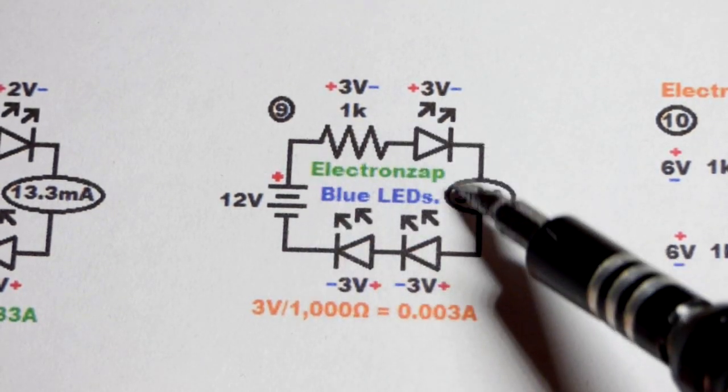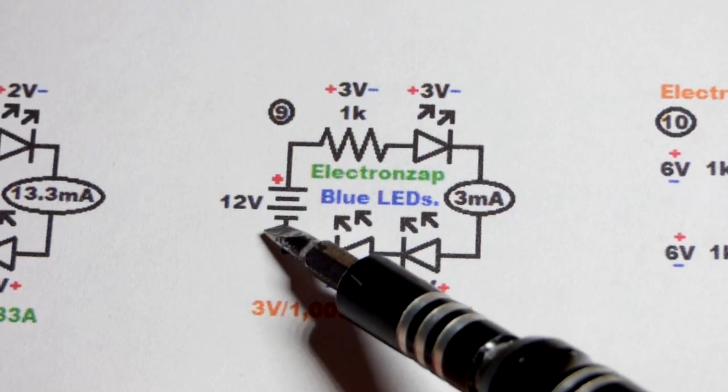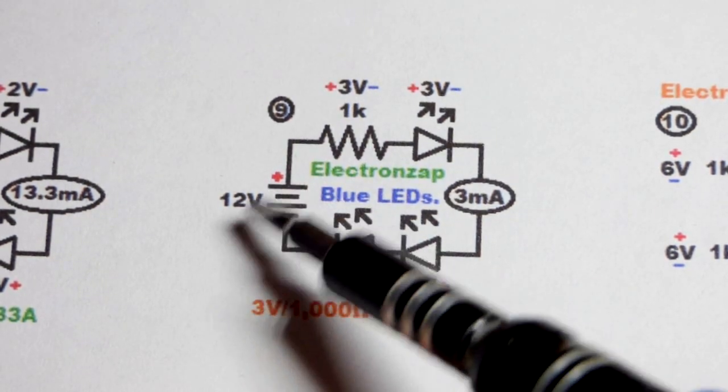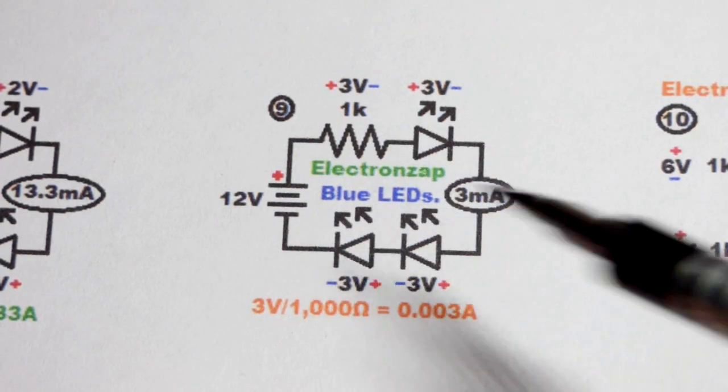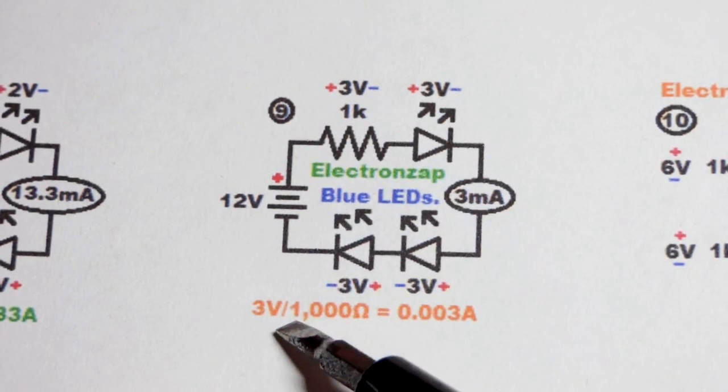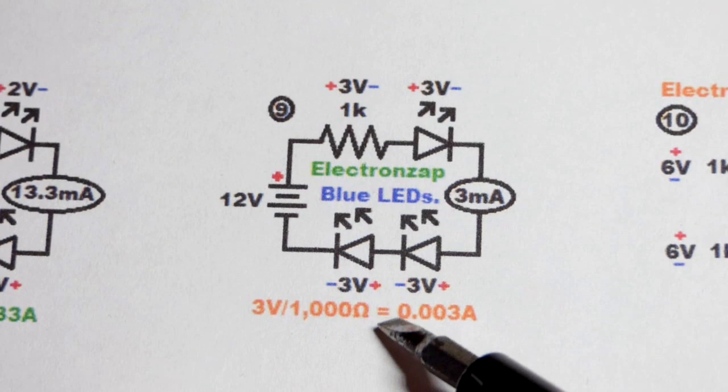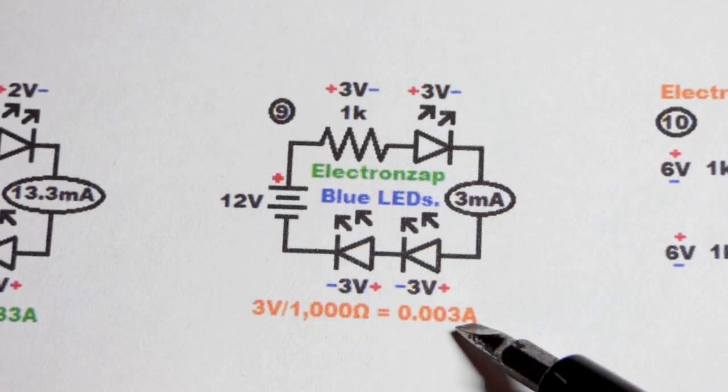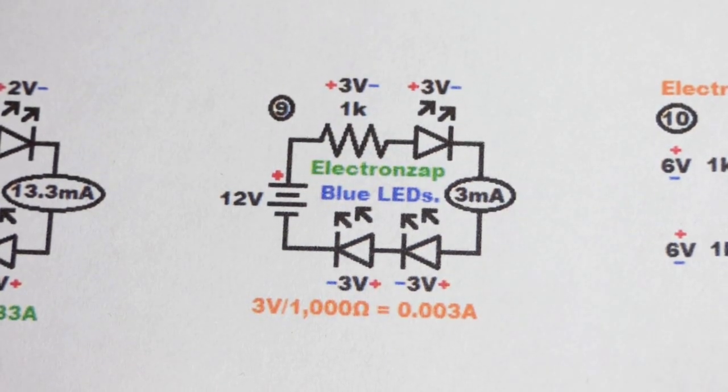That's a battery symbol by the way, but you don't have to use a battery. Any 12 volt source will work in that same circuit there. So three volts divided by a thousand ohms equals 0.003 amps, which is the same as three milliamps.